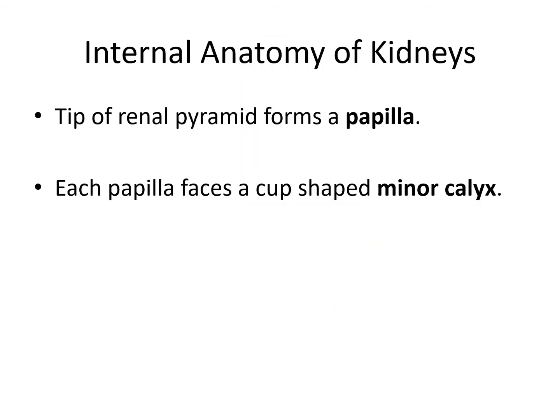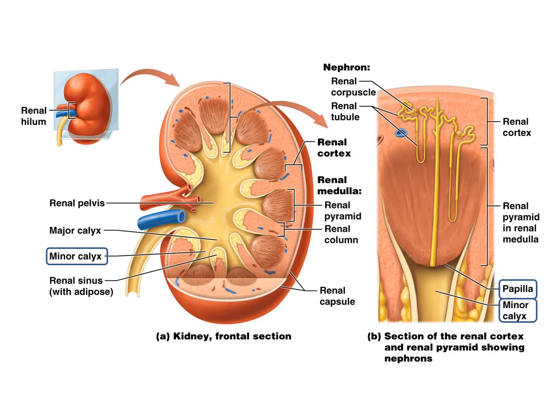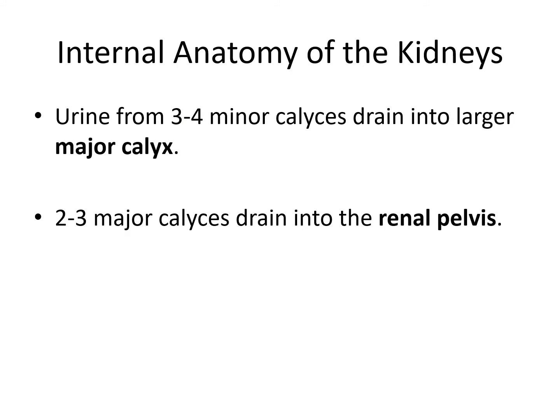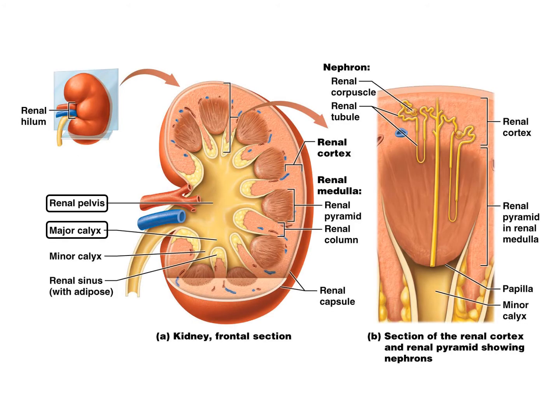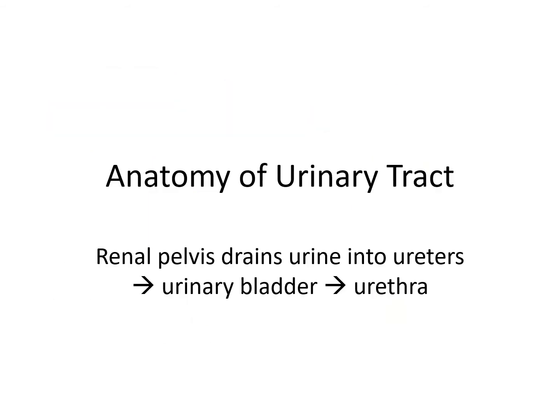The internal anatomy of the kidney also includes the renal papilla — the openings of the renal pyramids that drain into the minor calyx. Here you can see the renal pyramid and the renal papilla where urine drains into the minor calyx. Urine from several minor calyxes drains into larger major calyxes, and two or three major calyxes drain into the renal pelvis. The renal pelvis then drains urine into the ureters, which goes to the urinary bladder, and when expelled, goes to the urethra.